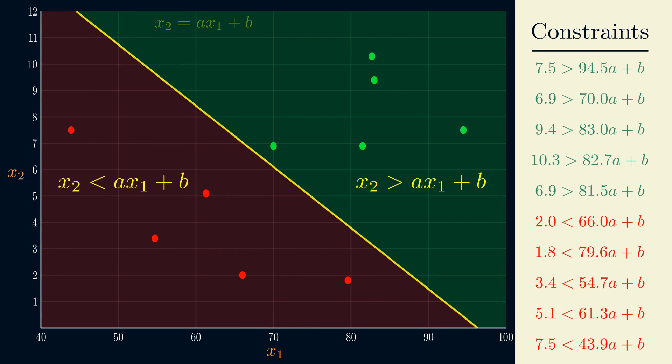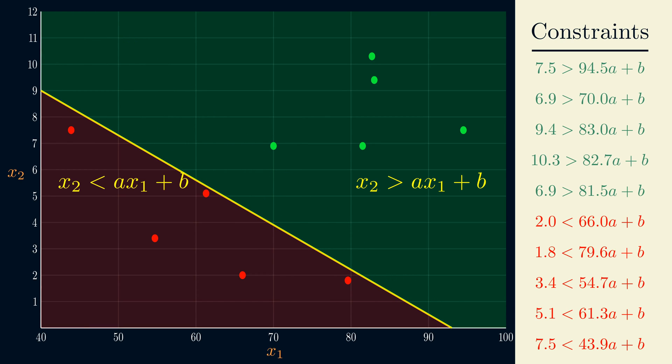Now, finding a line that satisfies all of these constraints isn't good enough, because it might give us a line that's too close to one of the classes. Intuitively, if we were to classify this new point, we would predict that it's red and not green, so this line is too close to the red points.